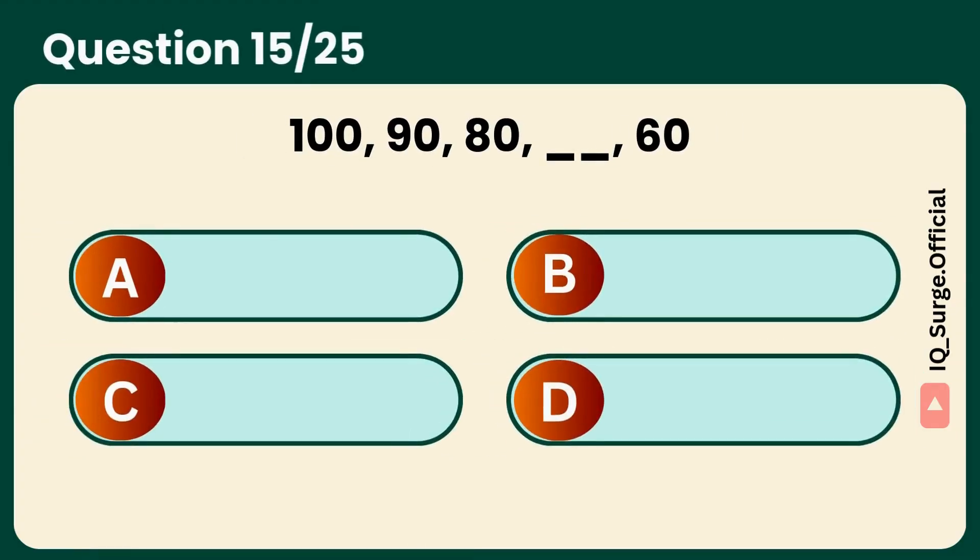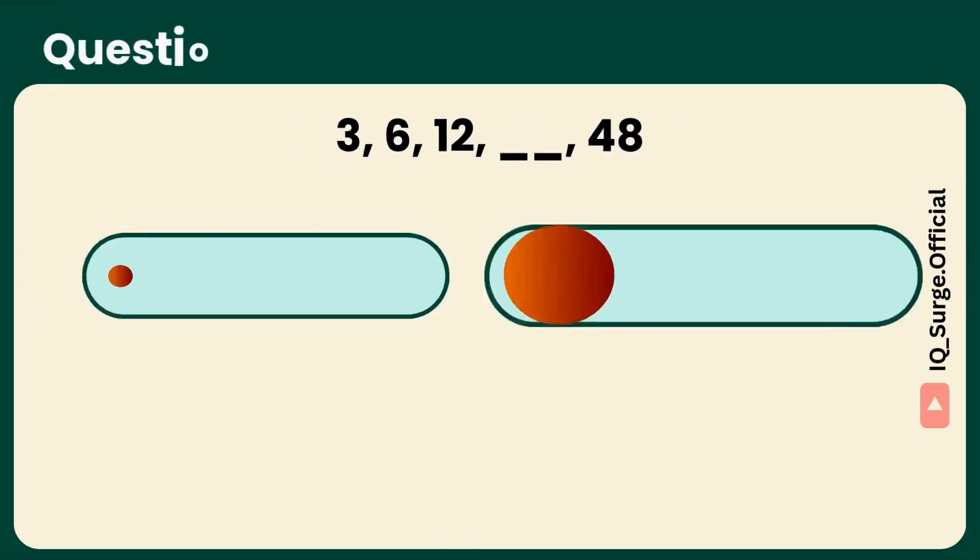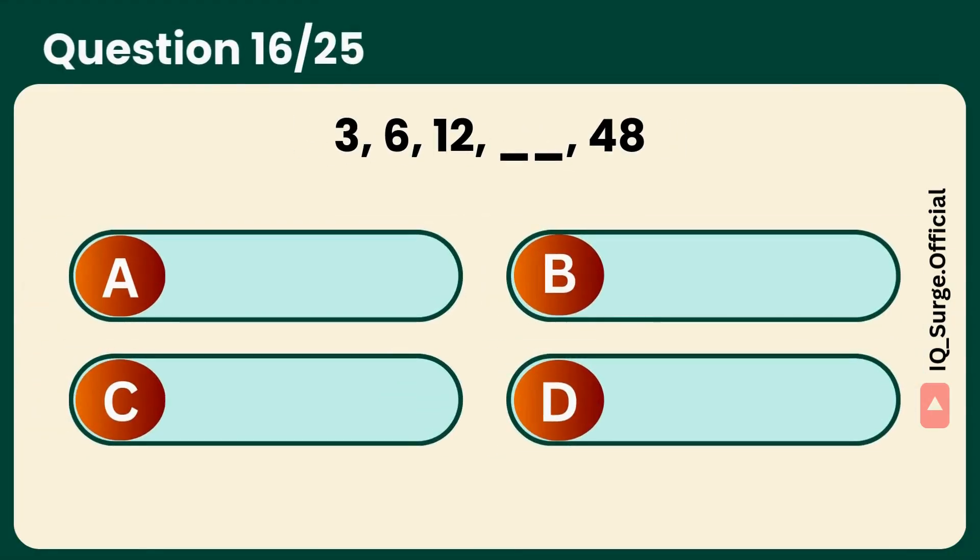Numbers are falling. But by how much? Correct. Seventy fills the gap. It's doubling every time. What's next? Yes, twenty-four. Double check it.